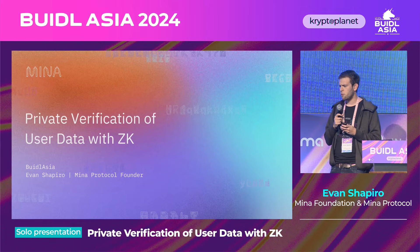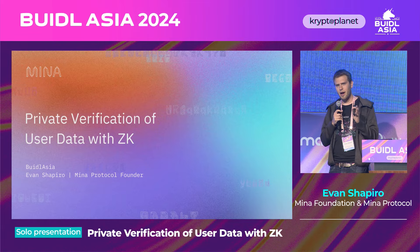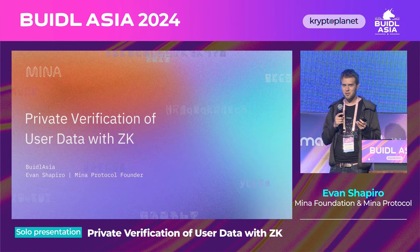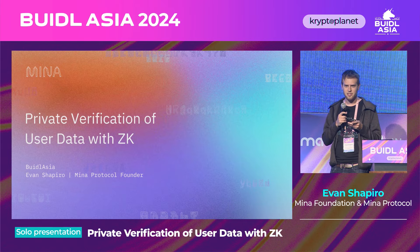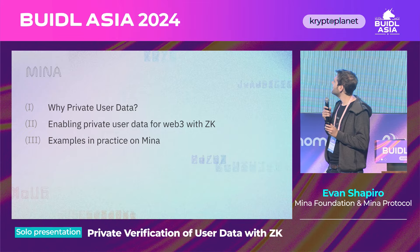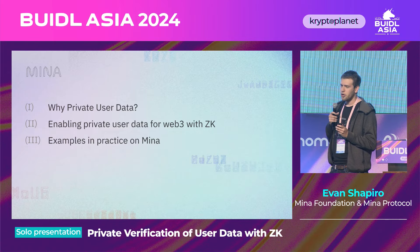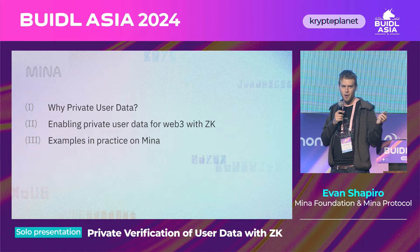A lot of the time Web3 has talked about privacy for private financial transactions or making things kind of more private. But it actually is very necessary for a lot of use cases we might just want to do. I'll talk a little bit about why private user data is important, then about why ZK is good for enabling this, and then some examples in practice using this on Mina.